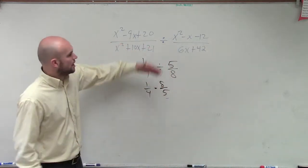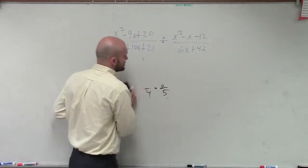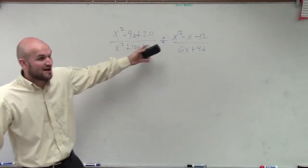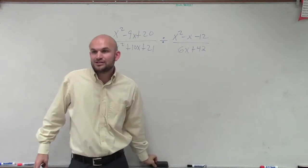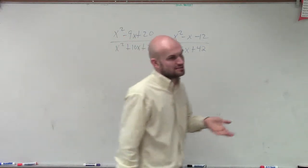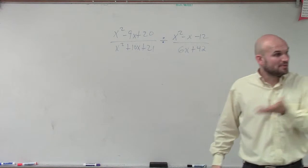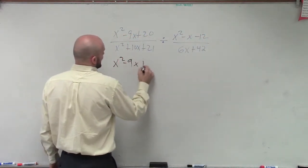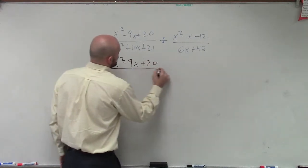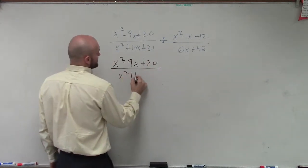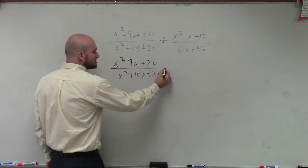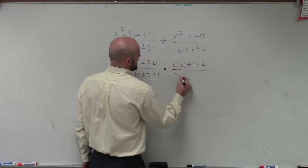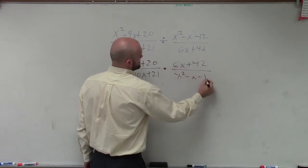So when we look up at this expression, we have a fraction with polynomials in it divided by another fraction with polynomials. What operation am I going to want to do? To evaluate this, I'm going to have to multiply by the reciprocal. So my real problem is going to look like this: x² − 9x + 20 divided by x² + 10x + 21, multiplied by 6x + 42 divided by x² − x − 12.